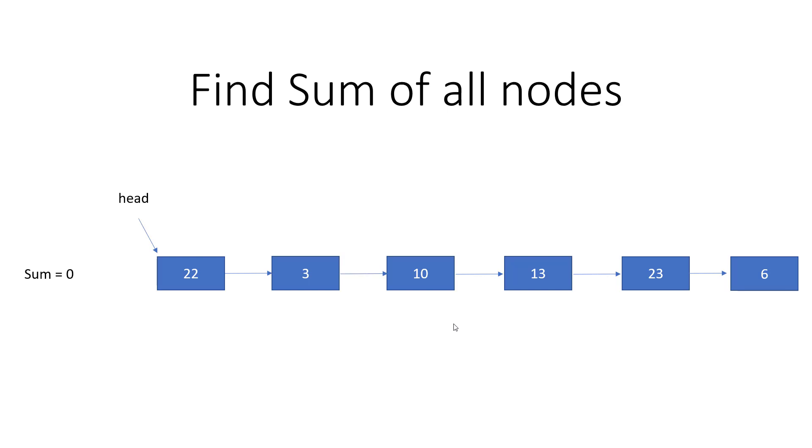Hey guys, welcome to Coding Simplified. Today we'll see how we can get the sum of all the nodes in a linked list. Basically, we need to add 22 plus 3 plus 10 plus 13 plus 23 plus 6 and then return this sum.